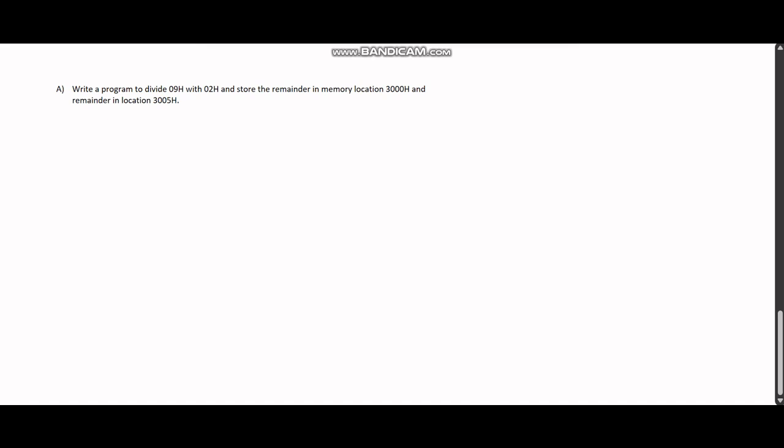In this question we have two values, 09H and 02H. What we want to do is divide 09H by 02H. Whatever we get in the quotient, we store it in the memory location 3005H.